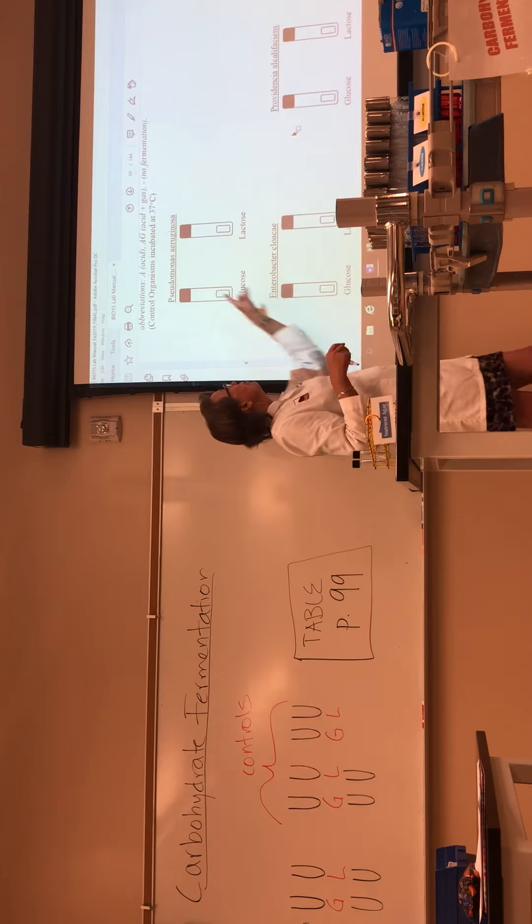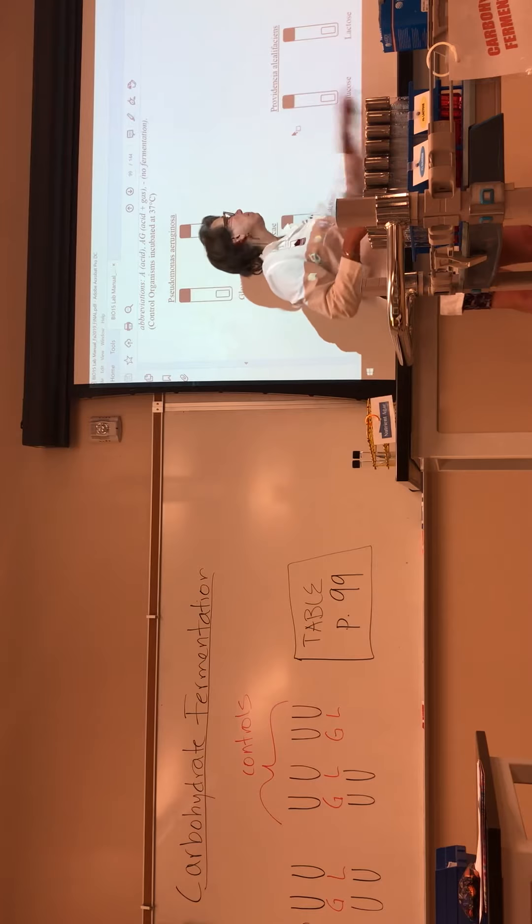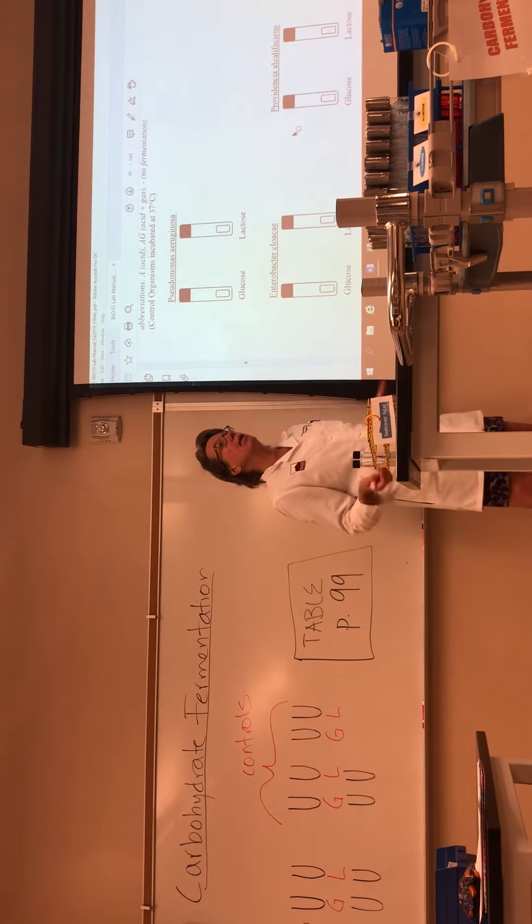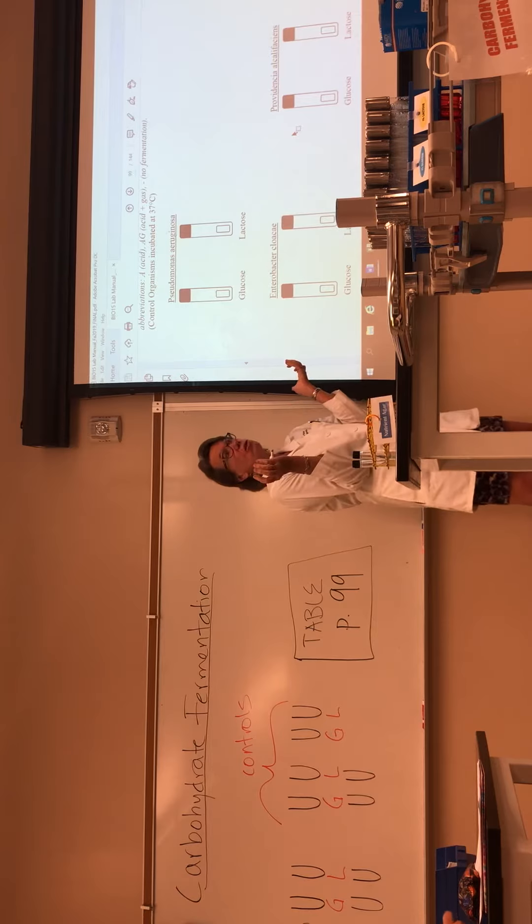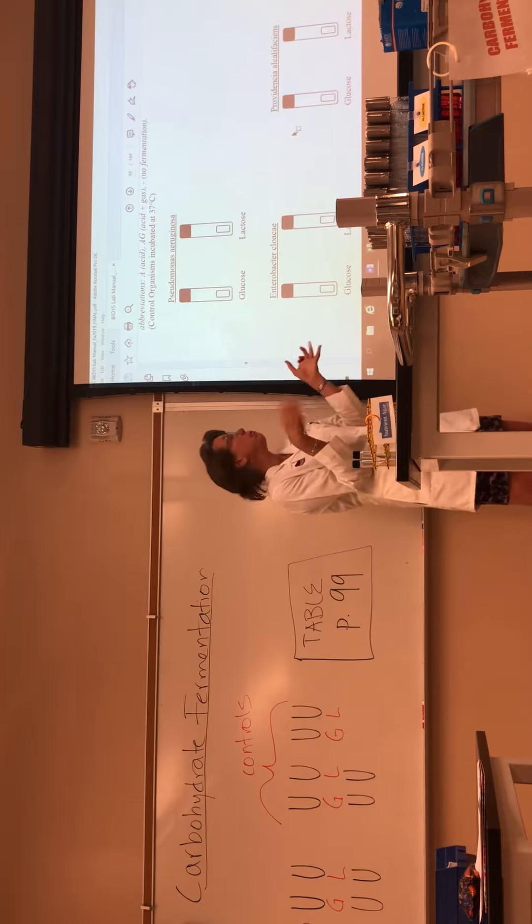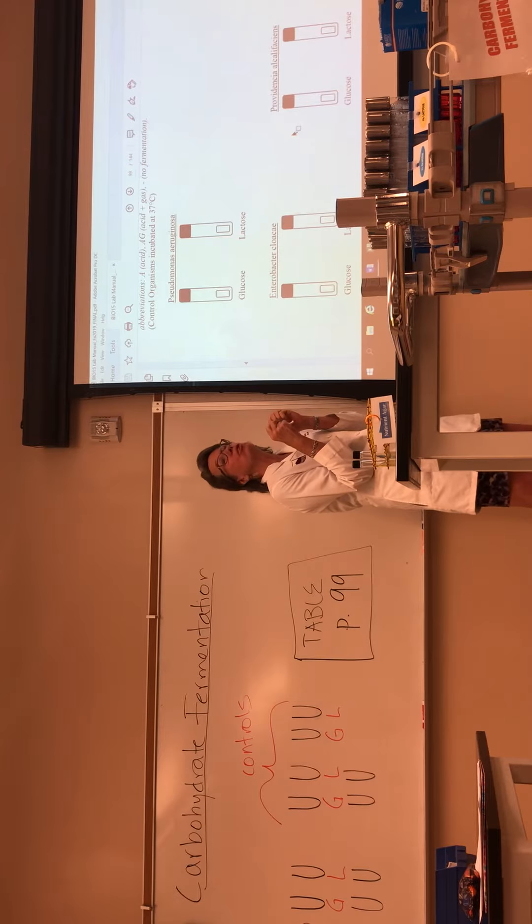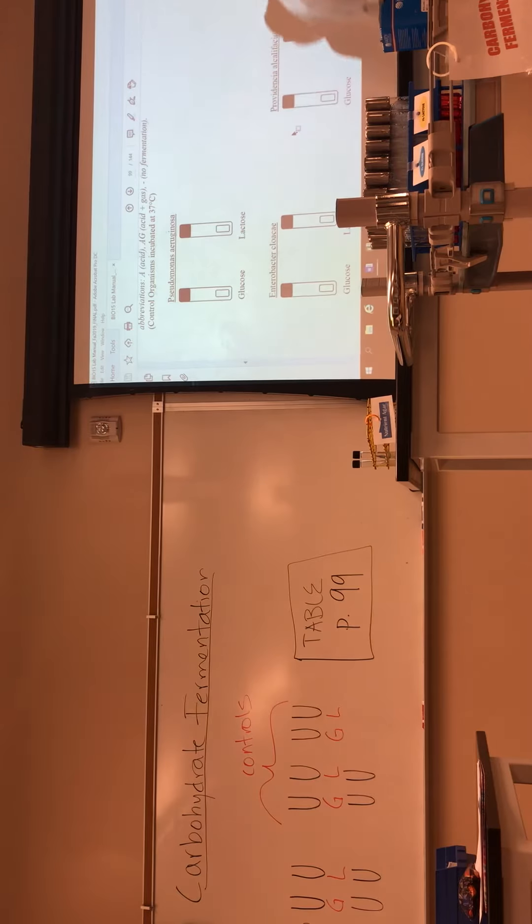Anita is going to inoculate three control organisms—Pseudomonas, Enterobacter, and Providencia—to show you that some bacteria can ferment all of those sugars, some bacteria can't ferment either one, and some can only ferment one of the sugars.